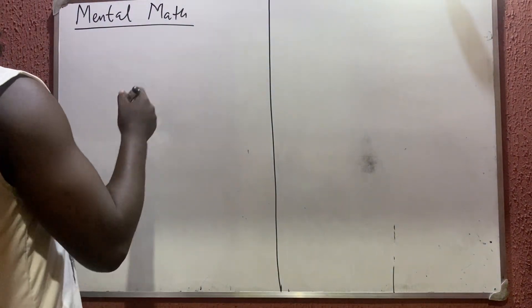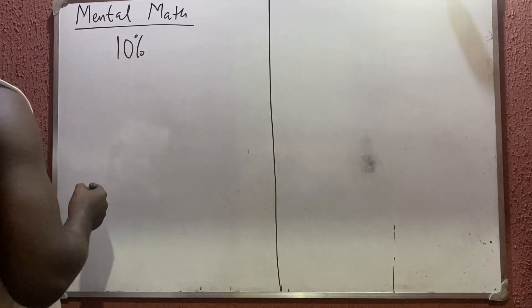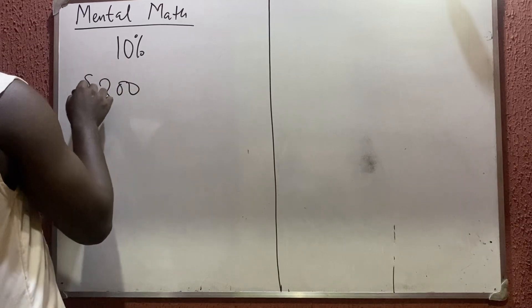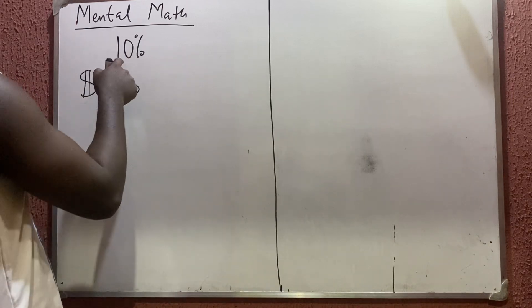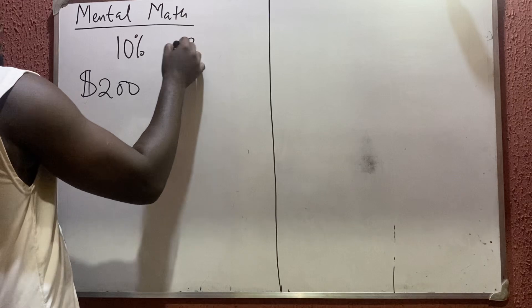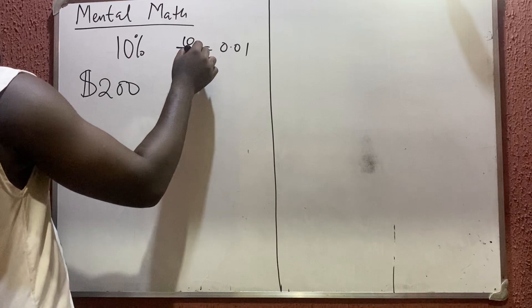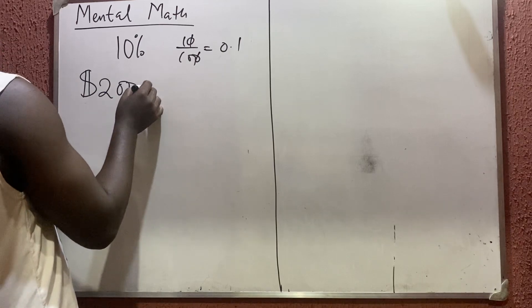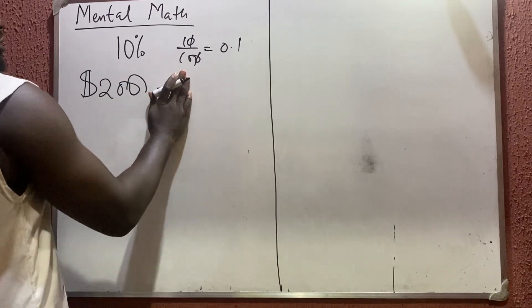I'll be showing the easiest way to calculate percentage. The first one is 10 percent — how do you calculate 10 percent of something? For example, 10 percent of 200 dollars. 10 percent simply means 10 divided by 100, which is 0.1. So if your decimal point is here, just move it once to the left. So 10 percent of 200 is simply 20 dollars.